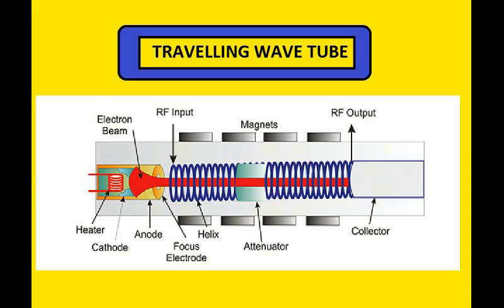The main part of the TWT is the attenuator, which is placed at the input side of the helix.